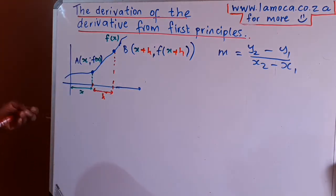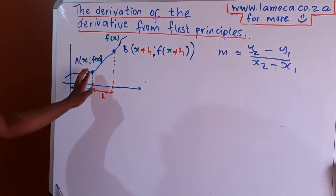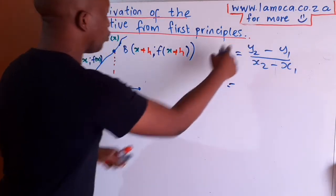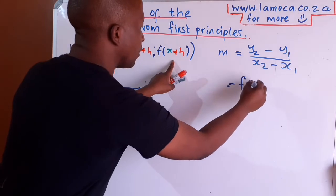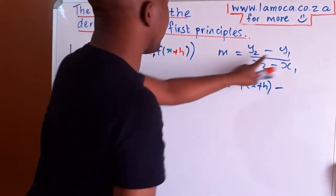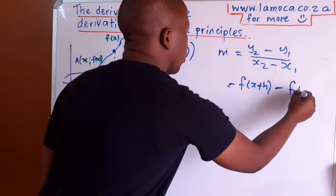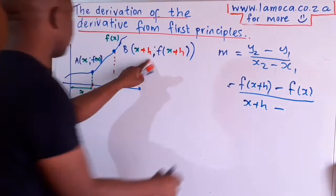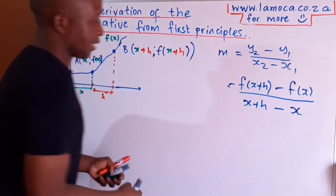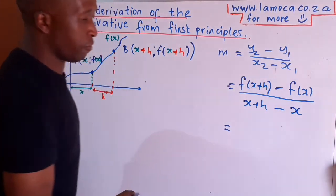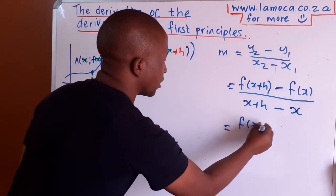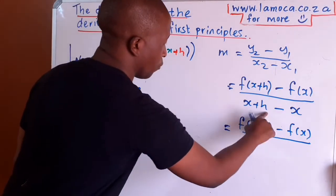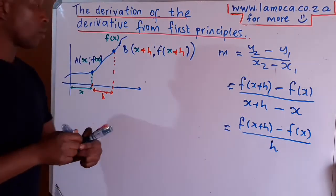Now I can work out the gradient using y2 minus y1 over x2 minus x1. So y2 is f(x+h), minus y1 which is f(x), all divided by x2 which is x plus h, minus x1 which is x. When you simplify, the x terms cancel on the denominator, leaving just h. So the expression becomes f(x+h) minus f(x) all divided by h.